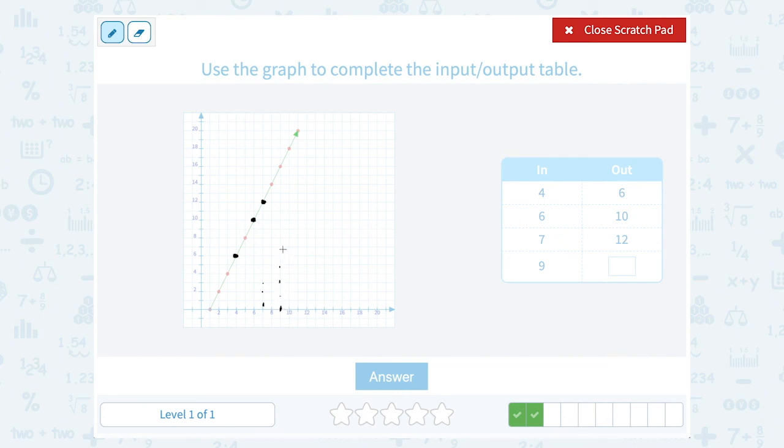So if I read directly up, I would land at this point. And then I can read across to see my output at that point would be 16.